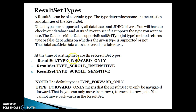There are three ResultSet types. The default ResultSet type is TYPE_FORWARD_ONLY. TYPE_FORWARD_ONLY means that the ResultSet can only be navigated forward — you can only move from the first row to the second row, third row, and so on. You can only move in the forward direction; you cannot move backwards in the ResultSet.